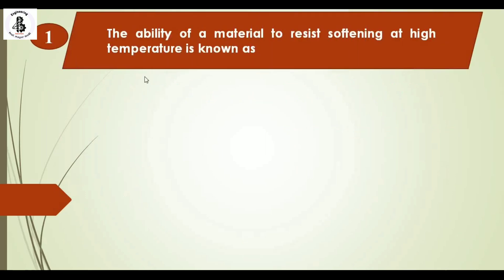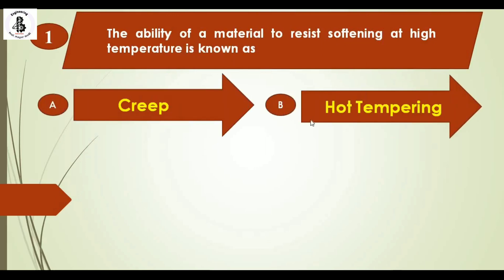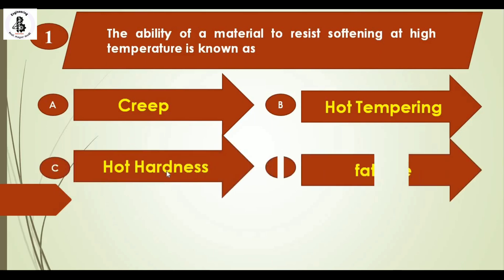The ability of the material to resist softening at high temperature is known as: option A creep, option B hot tempering, option C hot hardness, option D fatigue.